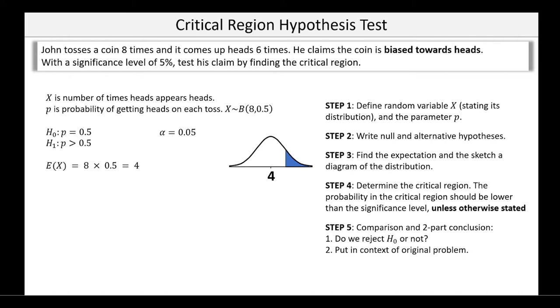So halfway between 4 and 8 is 6. Let's find the probability that X is greater than or equal to 6. Well, that's 14.45%. This is a lot bigger than 5%. So 6 wouldn't give me a significant result. Let's check the next value. The probability that X is greater than or equal to 7.